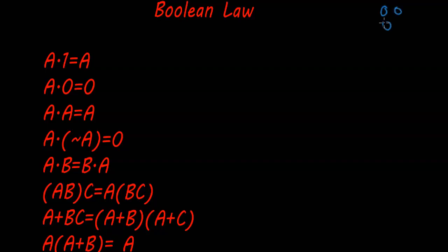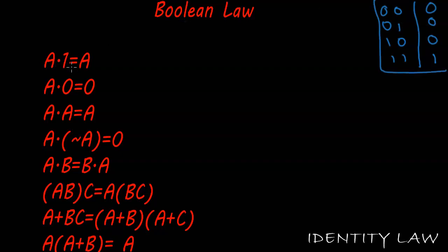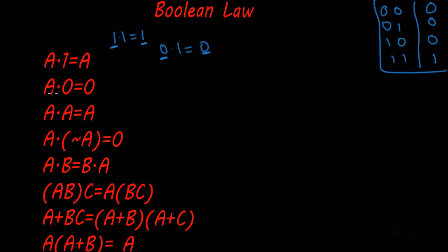Moving forward to the next category — AND laws. These laws follow the AND gate truth table: zero AND zero is zero, zero AND one is zero, one AND zero is zero, one AND one is one. Only when both inputs are one is the output one. So a dot one equals a — the Identity Law. If a is one, one dot one equals one; if a is zero, zero dot one equals zero. Also, a dot zero equals zero — the Null Law.